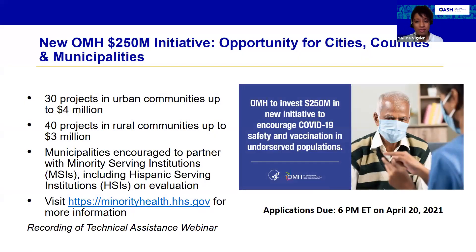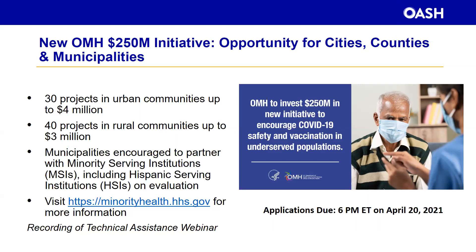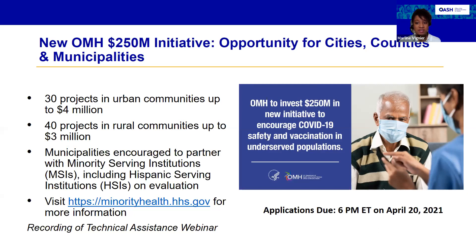The Office of Minority Health at HHS is dedicated to improving the health of racial and ethnic minority populations through the development of health policies and programs that will help eliminate health disparities. Just last week at the National League of Cities Conference, Vice President Harris announced $250 million in grants for localities to partner with community organizations on health literacy. The new initiative — Advancing Health Literacy to Enhance Equitable Community Responses to COVID-19 — is expected to fund approximately 30 projects in urban communities and 43 projects in rural communities.